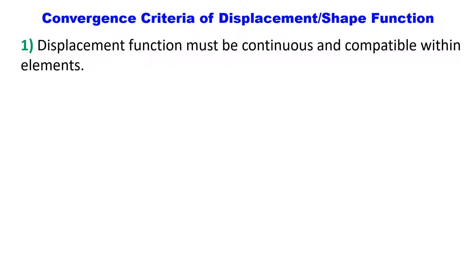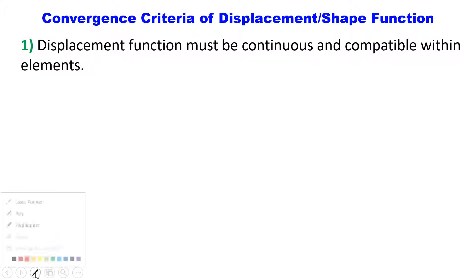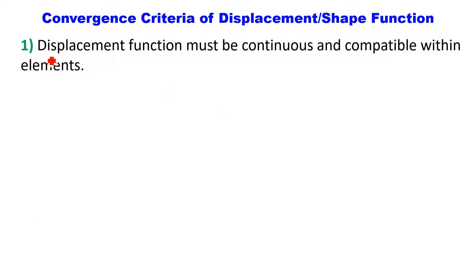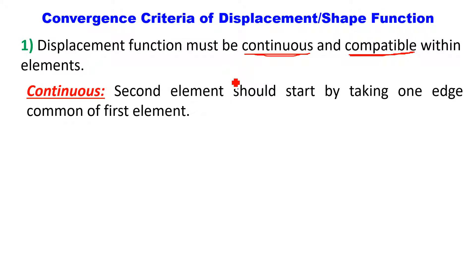The very first criteria that the displacement function must satisfy is: displacement function must be continuous and compatible within the elements. These two words are very important — continuous and compatible. What is the meaning of continuous and compatible? One by one we will discuss the meaning of these two words.